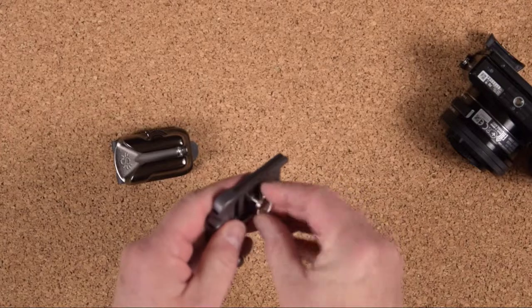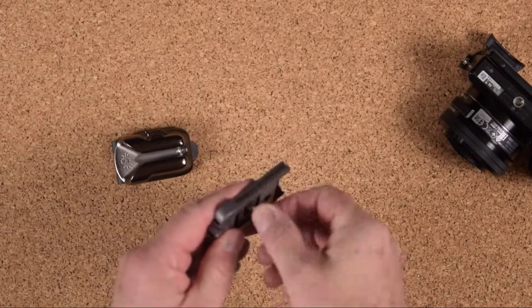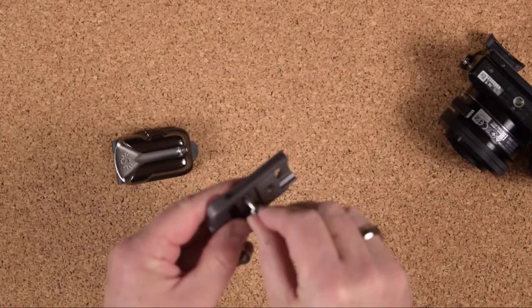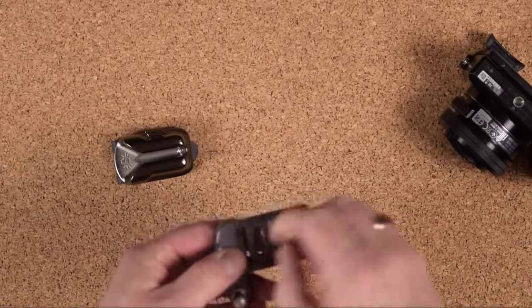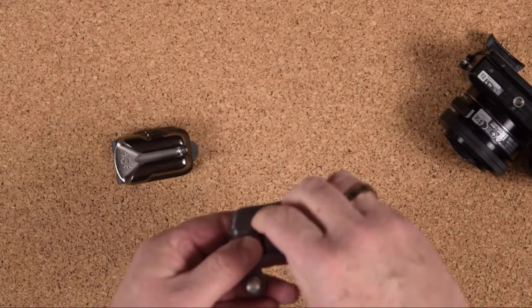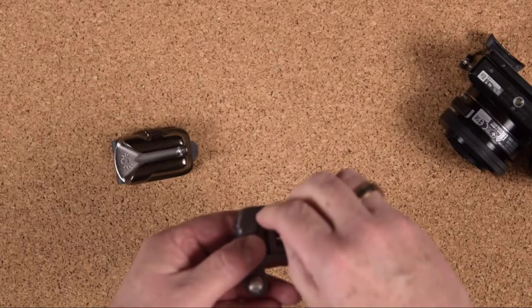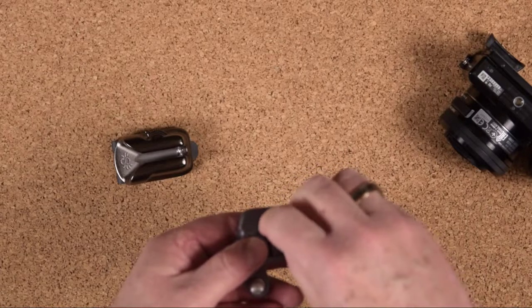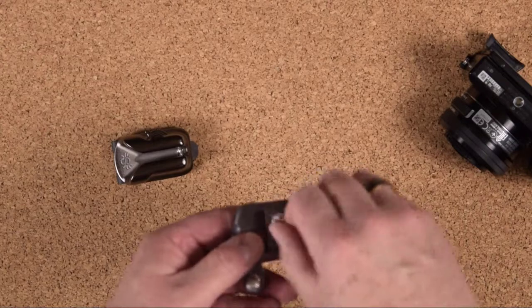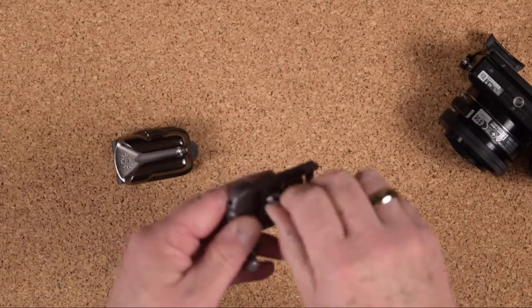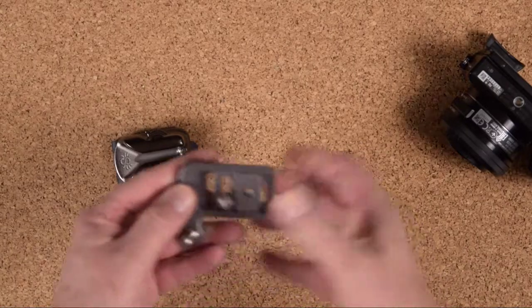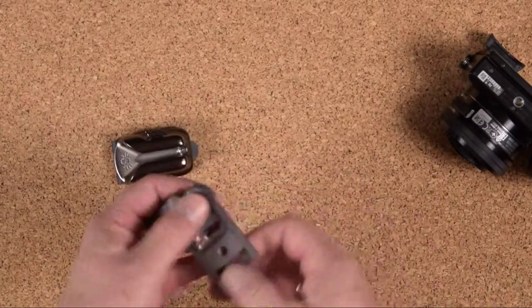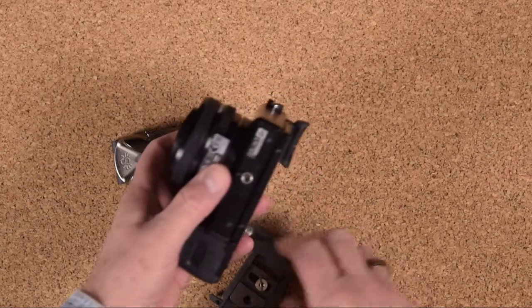To put it back in, just thread it in. It takes a little work to get it started straight, but once you start the threads, it should go in without forcing. If you're forcing it, you're going to strip the threads, so you need to back it out and start again.